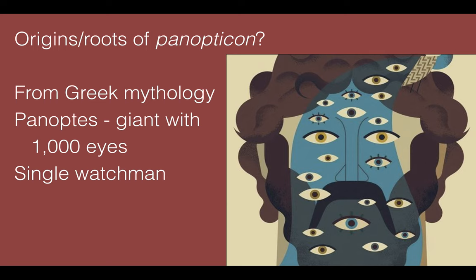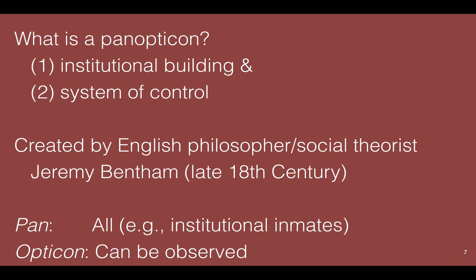Do you know the origins of the word Panopticon? It comes from Greek mythology. Panoptes was a giant with a thousand eyes — when he was tired and went to sleep, some of his eyes could close, but with so many he could still remain awake, making him the perfect watchman. From that, the Panopticon became a concept: an institutional building and a system of control, a term created by English philosopher and social theorist Jeremy Bentham in the late 18th century. Breaking the word down: 'Pan' meaning all, 'Opticon' meaning can be observed — so all can be observed.